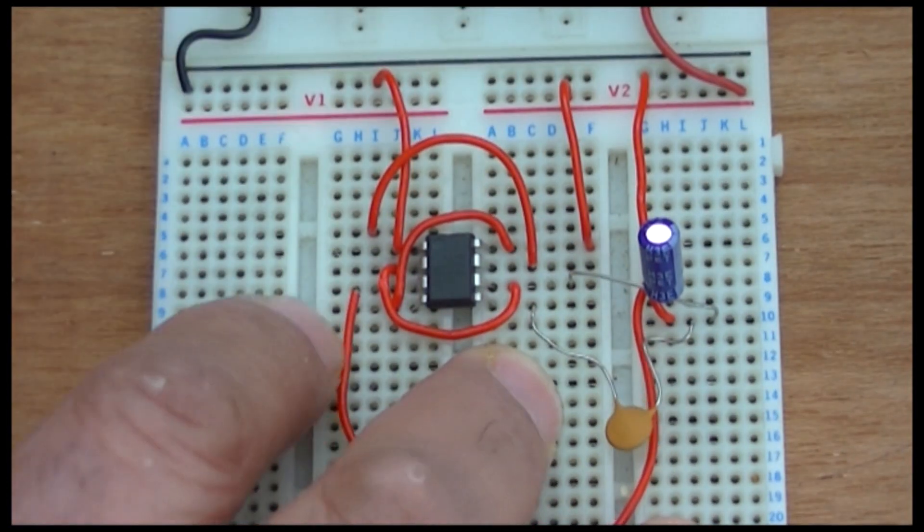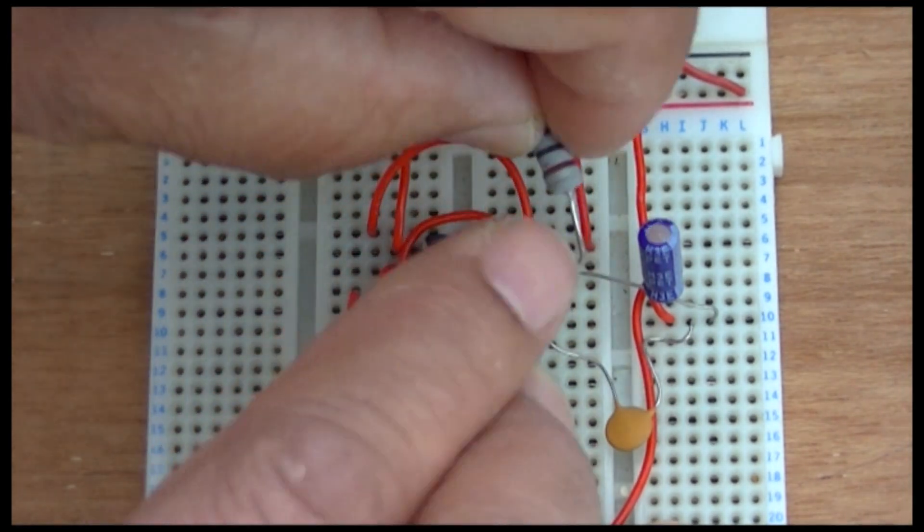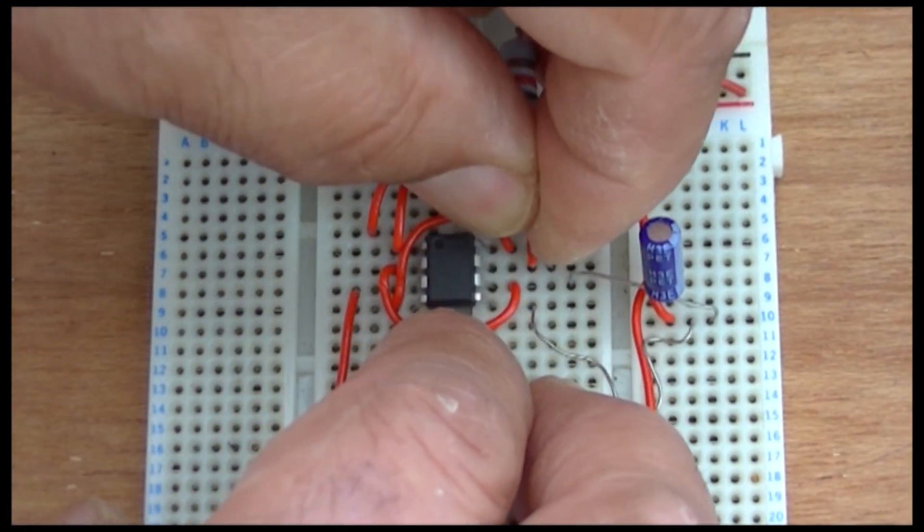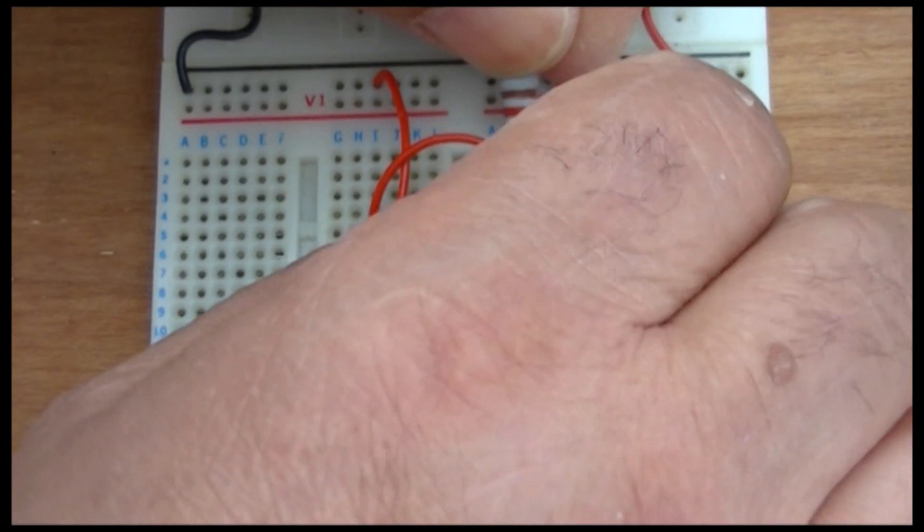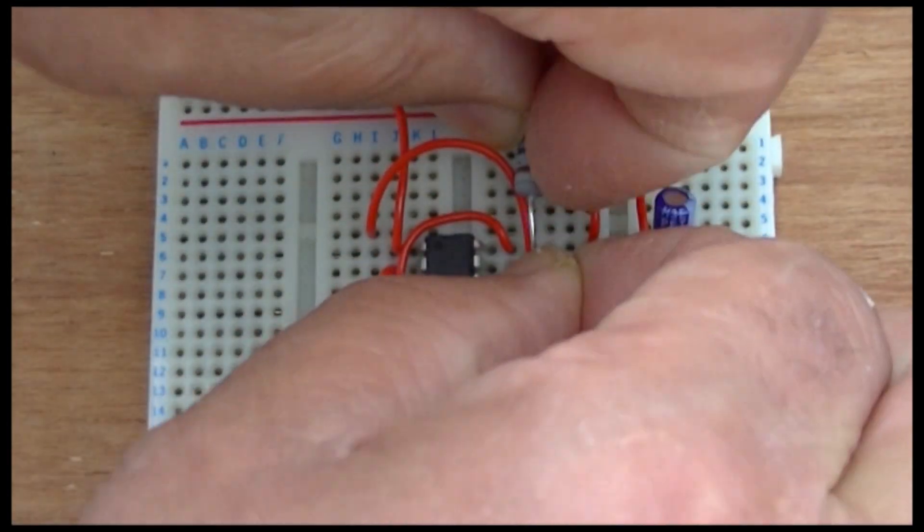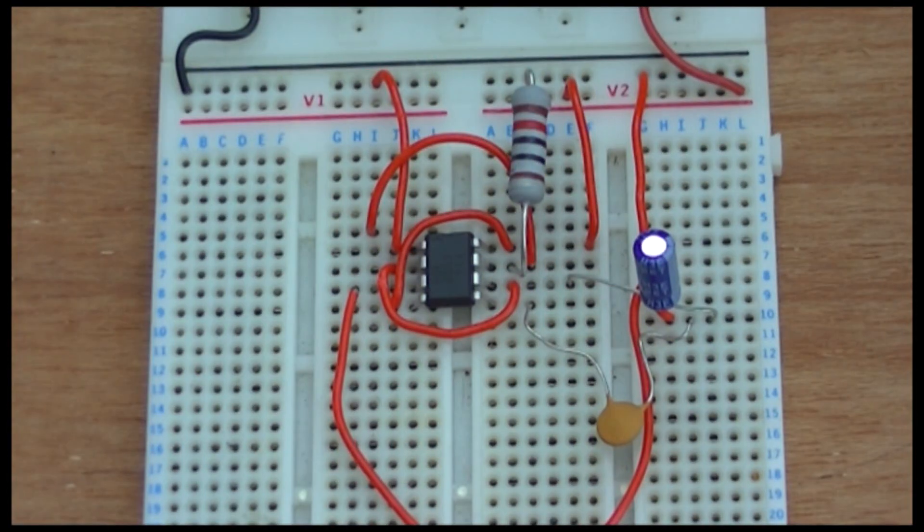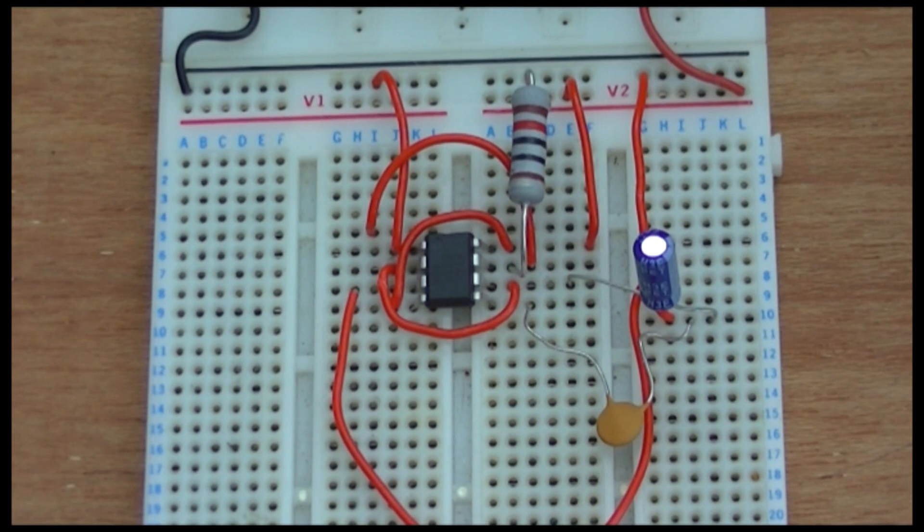And I've got a 10k resistor which is going from positive to number seven. So bring this one positive.